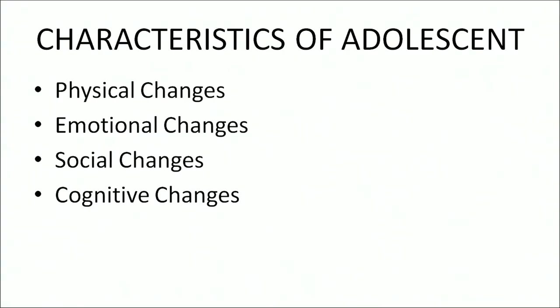There are various changes that occur in adolescence such as physical changes, cognitive changes, social changes, and emotional changes. These changes occur due to hormonal fluctuations in the body of adolescents. Let us try to understand each characteristic.